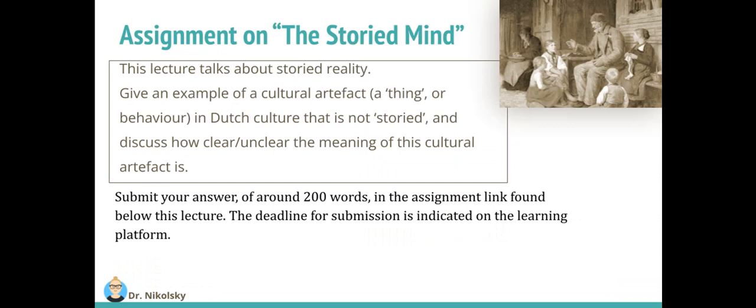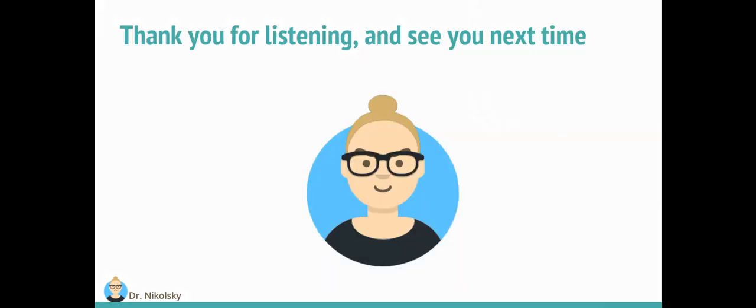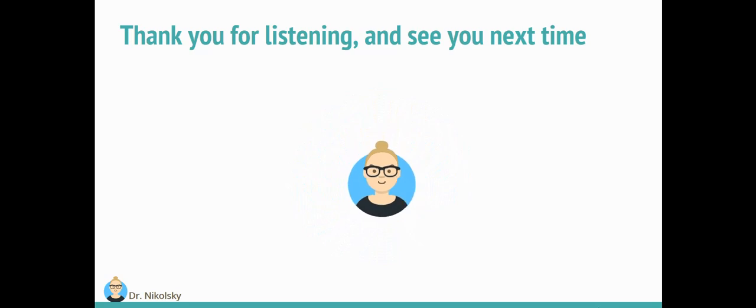Assignment on the lecture, the storied mind. This lecture talks about a storied reality. Give an example of a cultural artifact, a thing or a behavior in Dutch culture that is not storied. And discuss how clear or unclear the meaning of this cultural artifact is. If you are not Dutch, you can give an example from another culture. Submit your answer of around 200 words in the assignment link found below this lecture. The deadline for submission is indicated on the learning platform. Thank you for listening and see you next time.